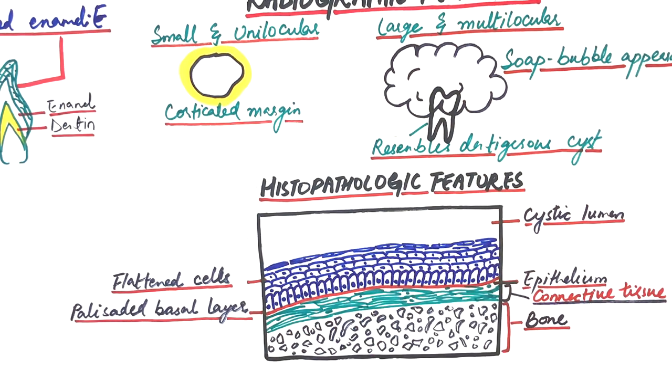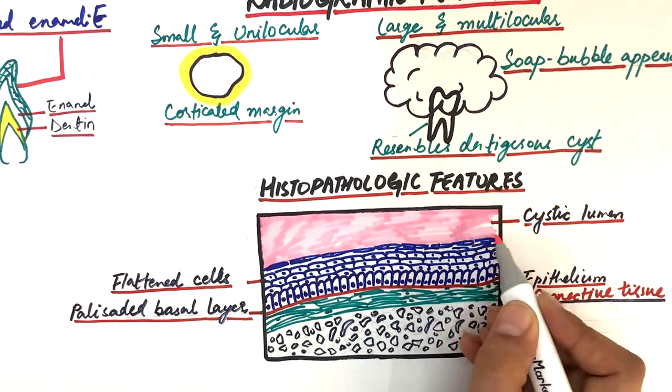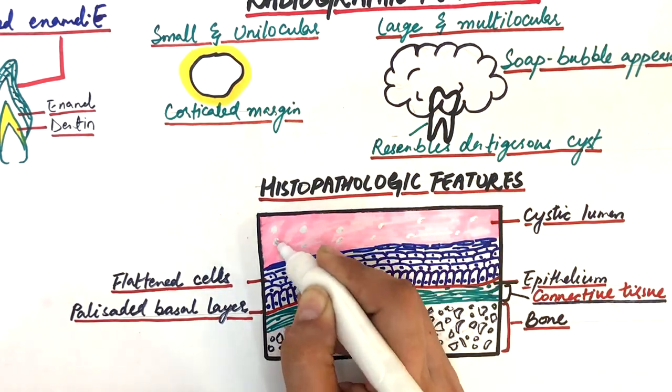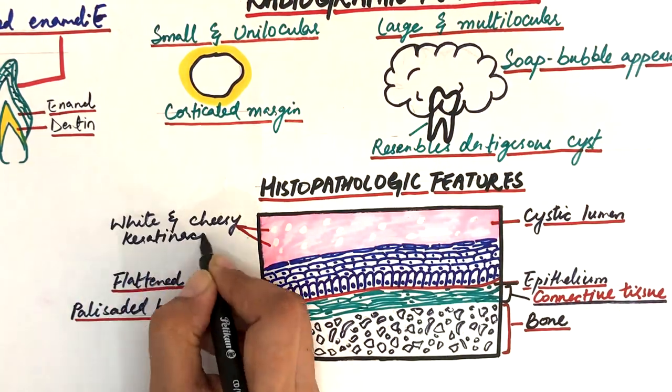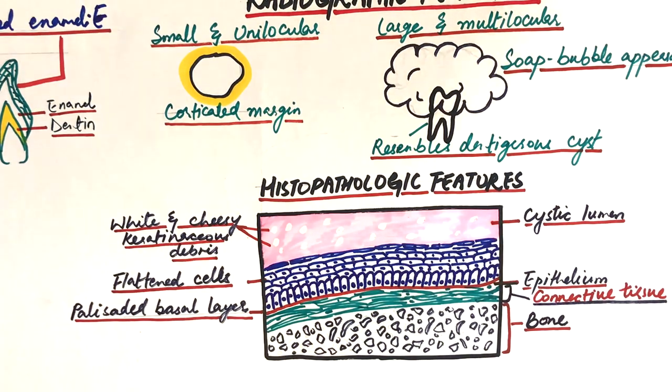While the luminal surface possesses flattened and parakeratotic cells. The fluid within the cystic lumen is either clear, resembling serum, or keratinaceous, containing white and cheesy keratinaceous debris. Inflammation results in alteration of all of these histopathologic features of the cyst.